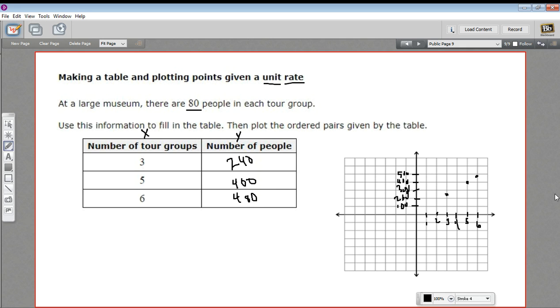Yeah. And what you might notice is that this actually makes a line. So this function, this 80 people per tour group, is what we call a linear function. So if I drew this line in here, and I extended it out like that, what I would see is if I had zero tour groups, I'd have zero people. That makes sense. If I had one tour group, I'm going to have a little less than 100. Well, that's 80, right?